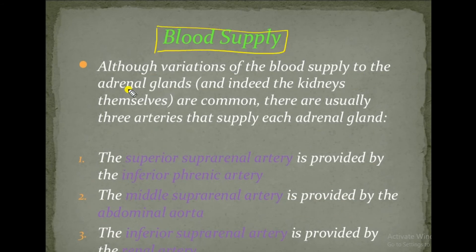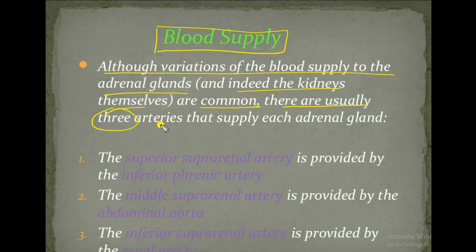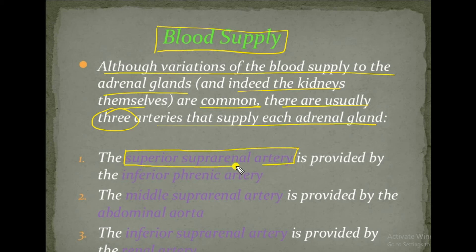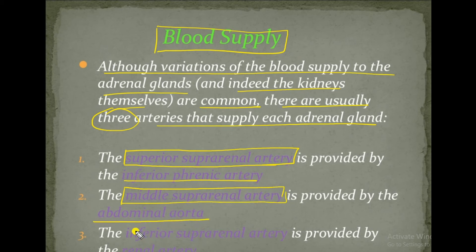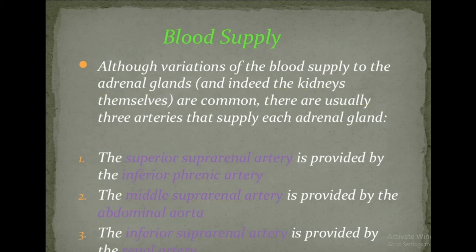Regarding blood supply, although variations in the blood supply to the adrenal gland are common, there are usually three arteries supplying each adrenal gland: the superior suprarenal artery from the inferior phrenic artery, the middle suprarenal artery from the abdominal aorta, and the inferior suprarenal artery from the renal artery.